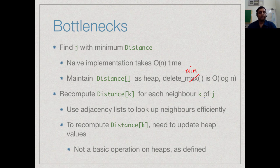Recomputing the distance means examining every neighbor k of j. To make sure that we can look up the neighbors efficiently we can use adjacency list so that we do not waste time carrying an entire adjacency matrix. But the bottleneck here is that we need to update the distance, that is we need to get into the heap and change values. We need to update heap values.